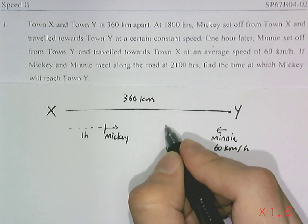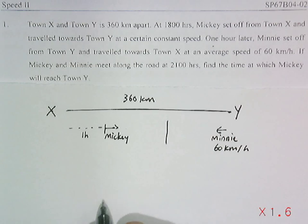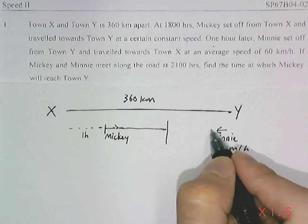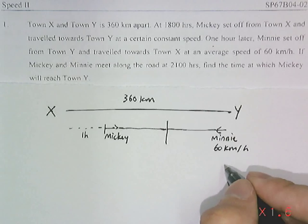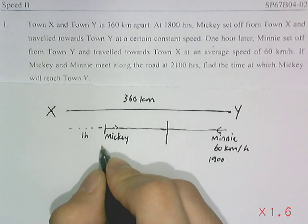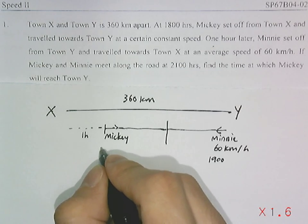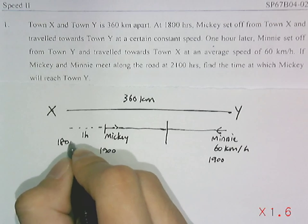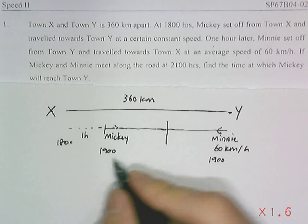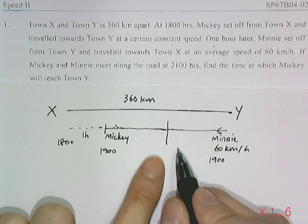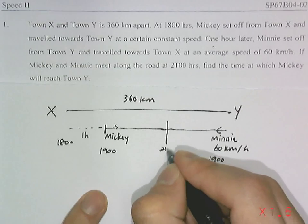Their meeting point could be somewhere here. We know that Minnie starts off at 1900 hours. Mickey after one hour will be at 1900 hours here also. He started off at 1800 hours, so one hour later, they will be at these two positions. They will meet after another two hours, so this is 2100 hours.